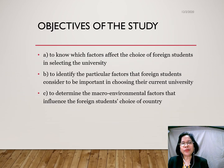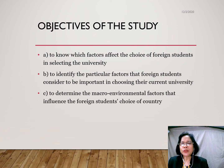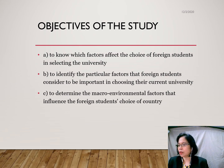Objectives of the study. First, to know which factors affect the choice of foreign students in selecting the university. Second, to identify the particular factors that foreign students consider to be important in choosing their current university. Third, to determine the macro-environmental factors that influence the foreign student's choice of country.